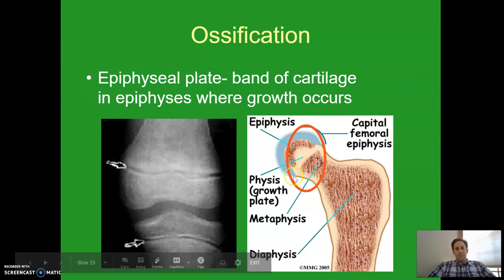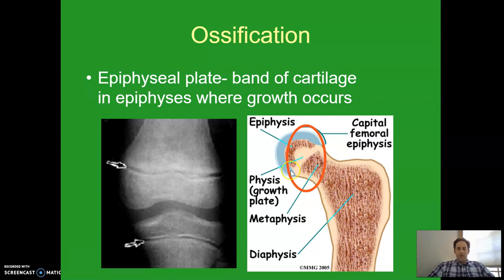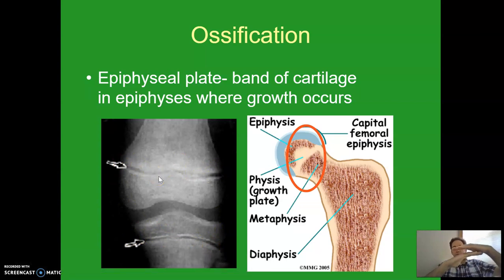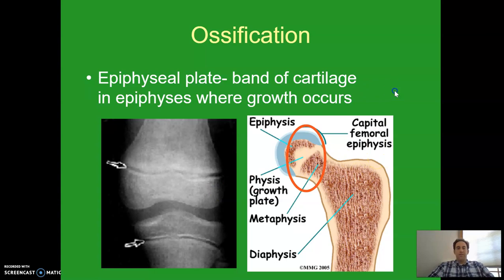The epiphyseal plate, or growth plate, is a little band of cartilage in the epiphysis — that's why it's called the epiphyseal plate; it's in the epiphysis of your long bones. It's just a band of cartilage, and that is where growth occurs. Cartilage is able to grow and expand, so by having this little band there, the growth plate can actually expand and then part of it turns to bone — expand, turn to bone, expand, turn to bone — and this allows children to grow taller while continuing ossification.